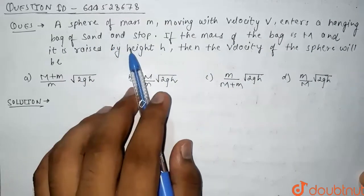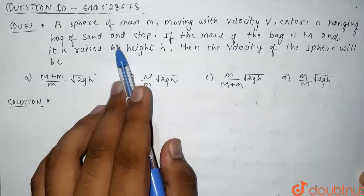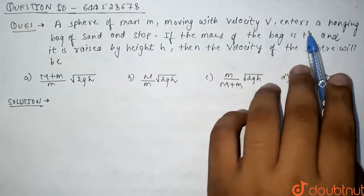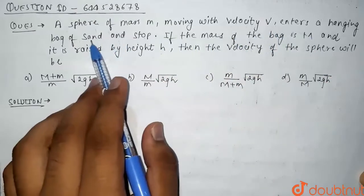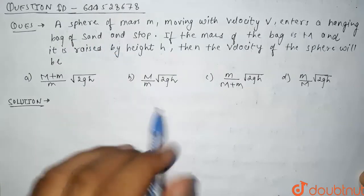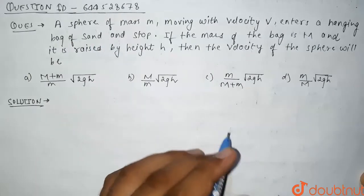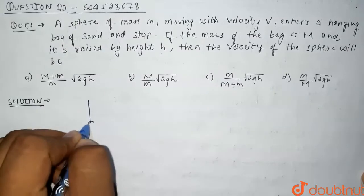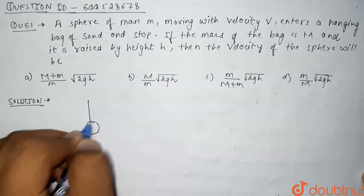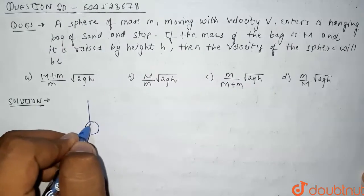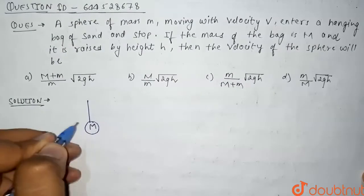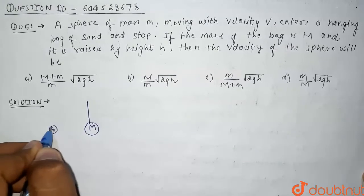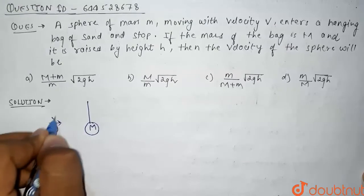So in this question we have been given a sphere of mass m which is moving with velocity v, it enters a hanging bag of sand and stops. This is our hanging bag of mass capital M, and this is a sphere of mass small m which is moving with velocity v.